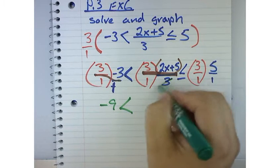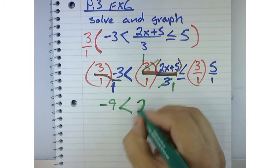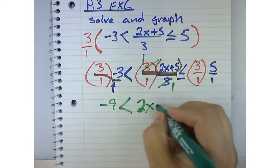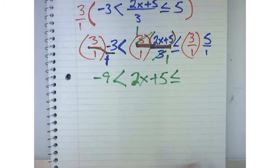They cancel out or reduce to 1 over 1, right? It doesn't just disappear. It just reduces. So then that stays as 2x plus 5 is less than or equal to 3 times 5, which is 15.